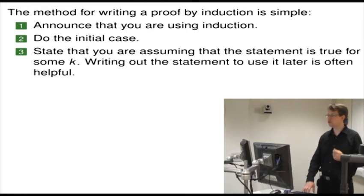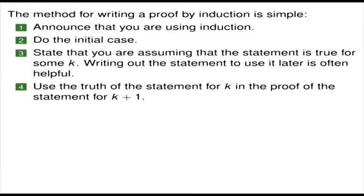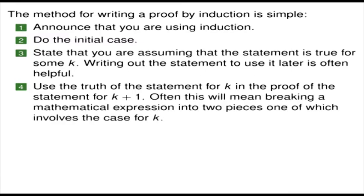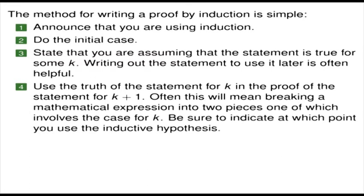The third step is very important: first, state that you're assuming the statement is true for some k. Writing out the statement to use it later is often quite helpful. Then in part 4, use the truth of the statement for k in the proof of the statement for k plus 1. Often this will mean breaking a mathematical expression into two pieces, one of which involves the case for k. Be sure to indicate at which point you use the inductive hypothesis — this is very helpful when getting feedback from a teacher, who can spot if you're using it in the wrong place.